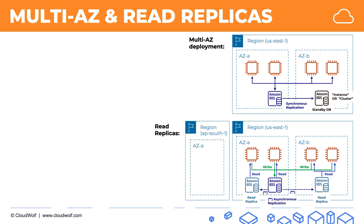Another option available to you is read replicas in a different region. You can put a read replica into another region — the EC2 instance will still write into the original database, but it can read from the read replica locally. This not only helps with scalability but also improves local performance, so the EC2 instance doesn't always have to go to a different region to read data. It also helps with disaster recovery: if the original region, such as US-East-1, completely fails, you can manually switch over that read replica in the other region to become a standalone database.